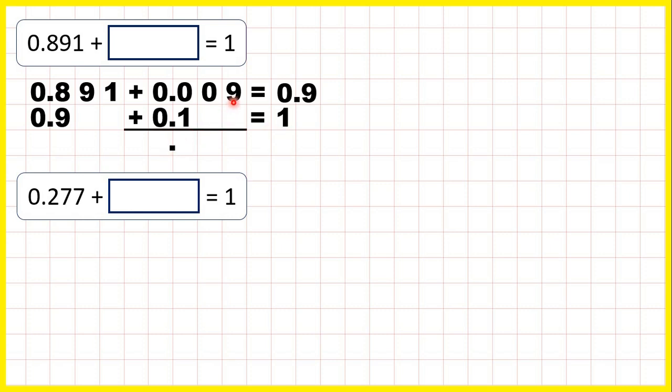So, all together, we added 9 thousandths and 1 tenth, so we added 0.109 to make one whole.